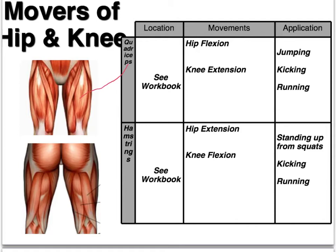Below it we have the hamstrings — this is a posterior view of the thigh. It's a large group of three muscles and it is responsible for hip extension and knee flexion. So those two work in pairs: the quadricep does hip flexion and knee extension, that's straightening of the leg, and the hamstrings do hip extension and knee flexion.